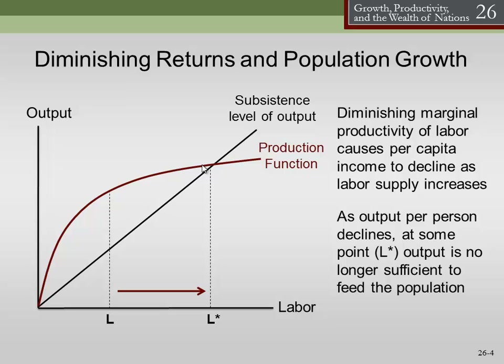Robert Thomas Malthus's theory was that there would always be starvation in the world because world population would tend to grow faster than food production — population growth was limited by how much people could eat. The real question then becomes where is this L-star point, where we can no longer support the population?